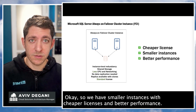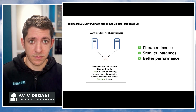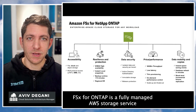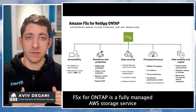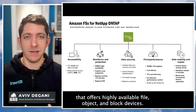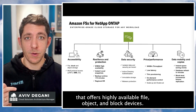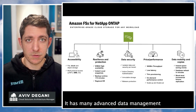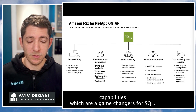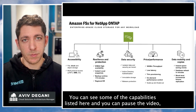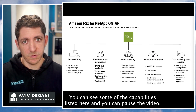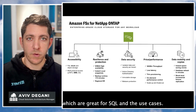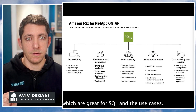So we have smaller instances with a cheaper license and better performance, but how do we make sure our storage is also highly available? FSx for ONTAP is a fully-managed AWS storage service that offers highly-available file, object, and block devices. It has many advanced data management capabilities which are game-changers for SQL. You can pause the video to review the capabilities listed here, but I want to deep dive into the specific capabilities which are great for SQL and the use cases.